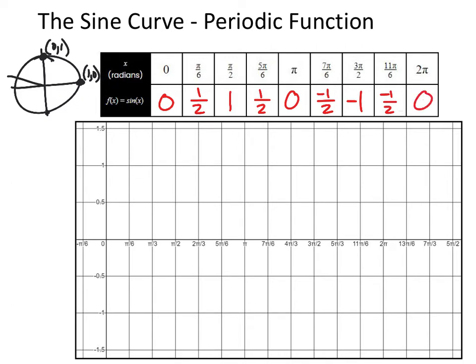The coordinate at the bottom is 0, negative 1 — so the second coordinate is negative 1 — and at the right it's 1, 0. Remember, from A-S-T-C, sine is positive only in quadrants 1 and 2. So knowing the unit circle, we can graph this: 0, one half, 1, one half, 0, negative one half, negative 1, negative one half, 0.